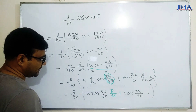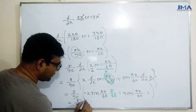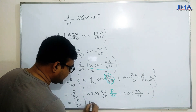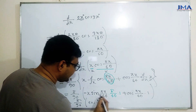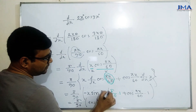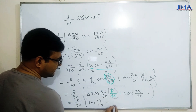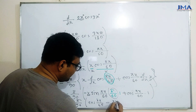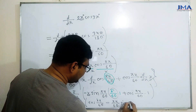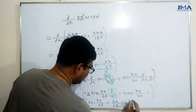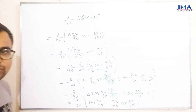minus को plus के बाद लिखो — यह देखने में भी अच्छा लगता है। pi x by 60 के साथ गुणा — यह बाहर आता है, तो इसे बाहर लिखो: pi by 60 × sin(pi x by 60)। यह हमने एक composite function का अंतरी करण कर लिया।